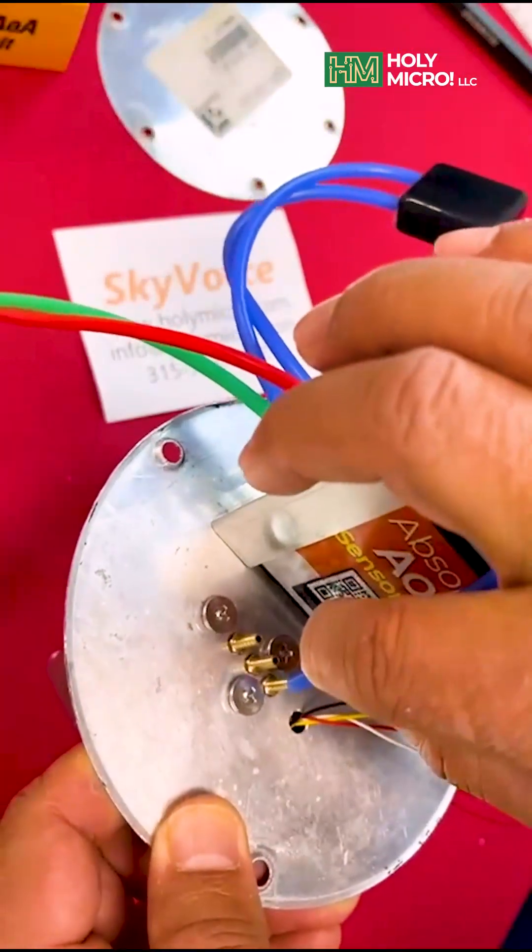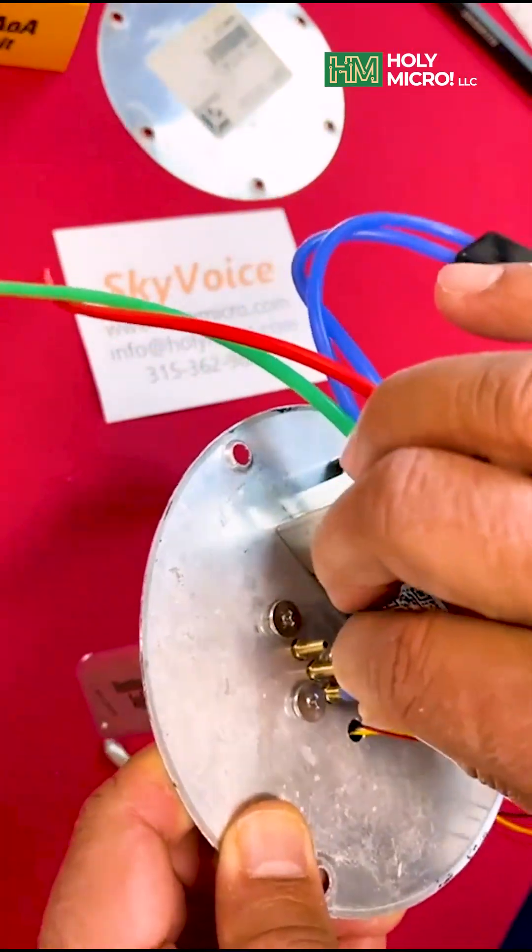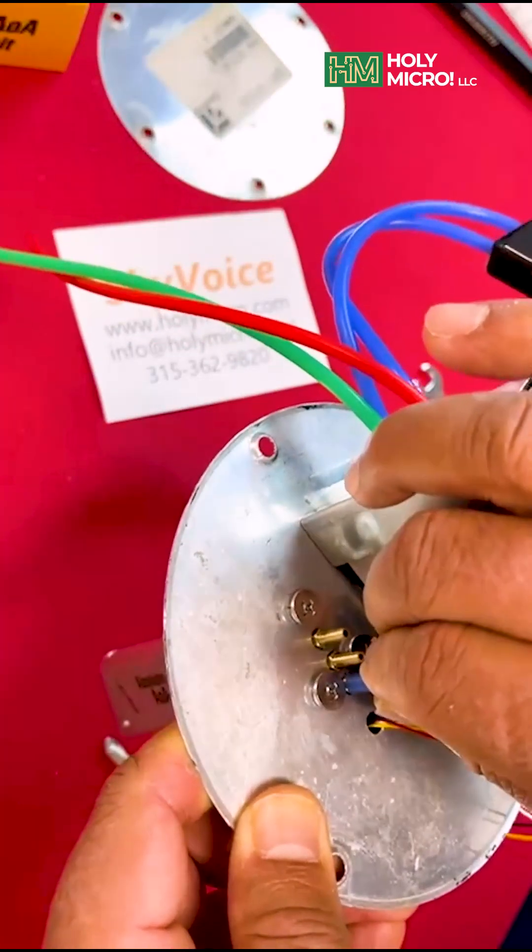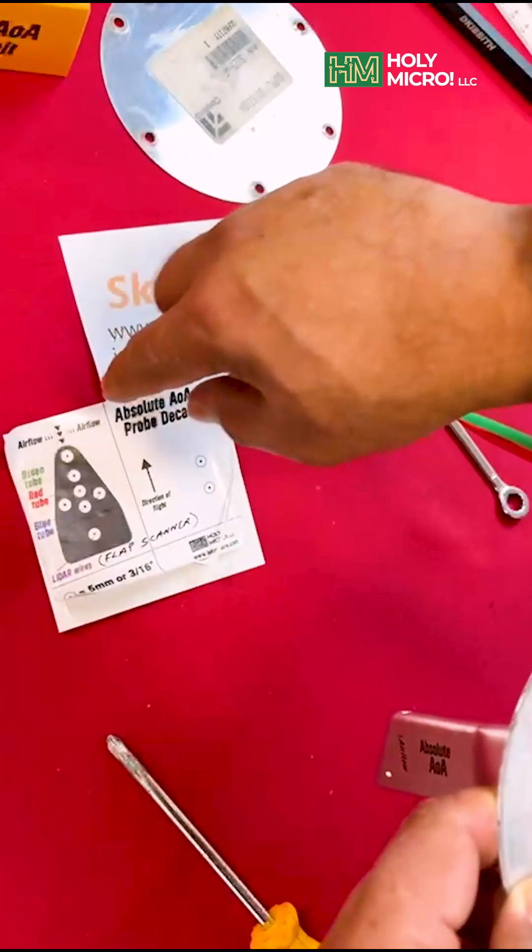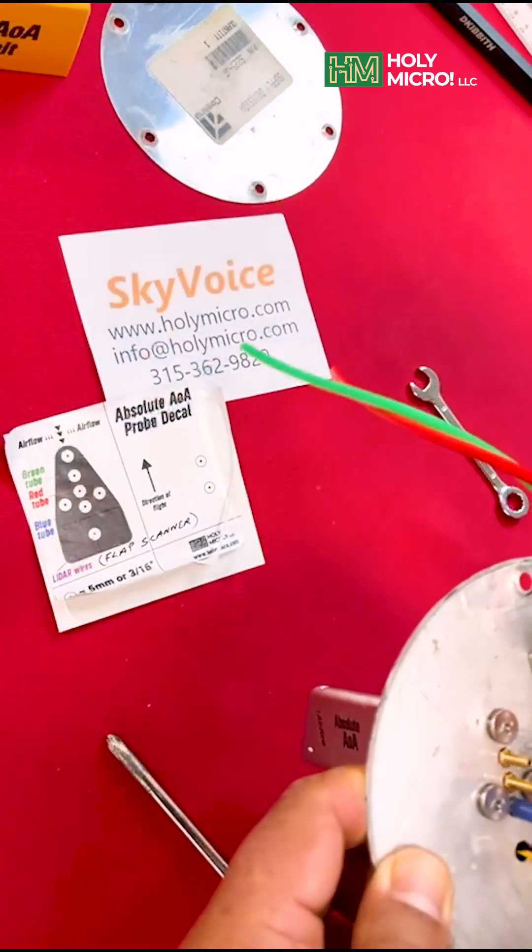Now we connect the three air tubes to the probe. This is an absolutely critical step for accurate readings. Follow the color code on the decal sticker precisely to connect the tubes to their corresponding ports on the probe.